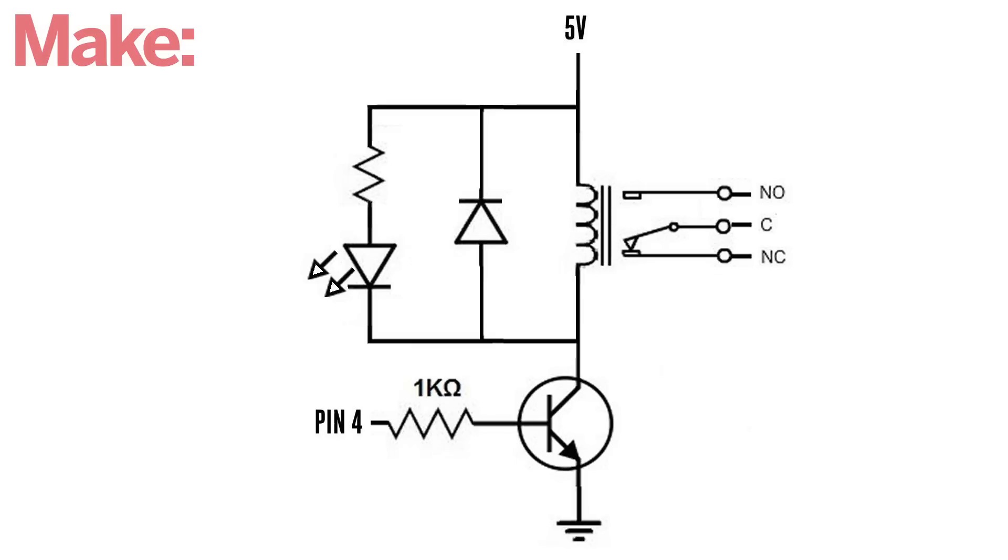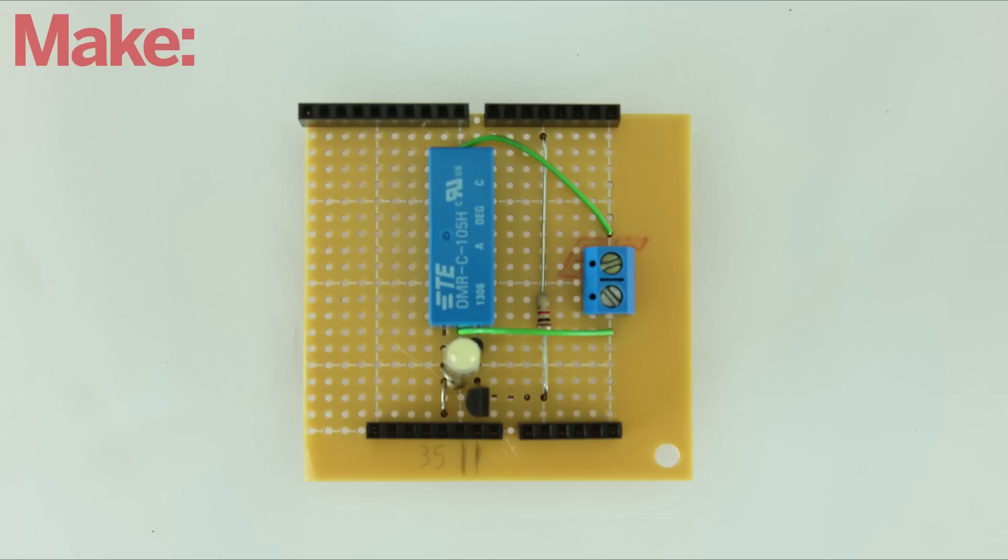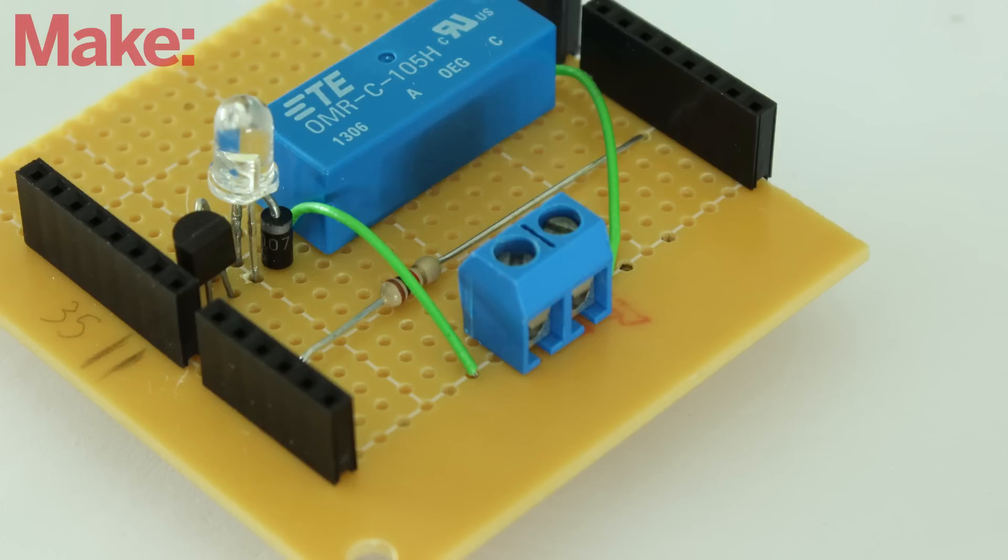Optionally, you can also add an LED in parallel with the relay coil to act as a visual indicator of when the relay is on. Lastly, the switching terminals of the relay were connected to a pair of screw terminals. This lets you make temporary connections to the relay as needed.